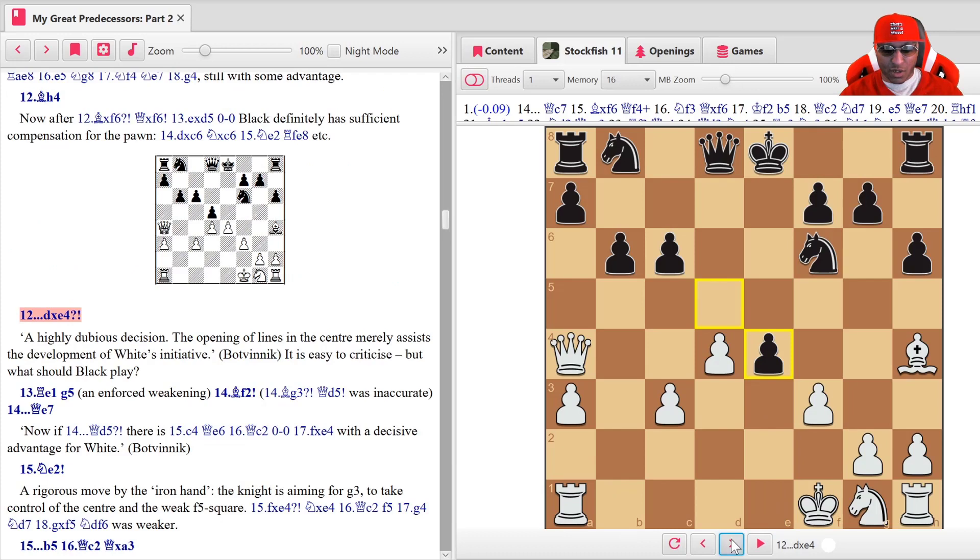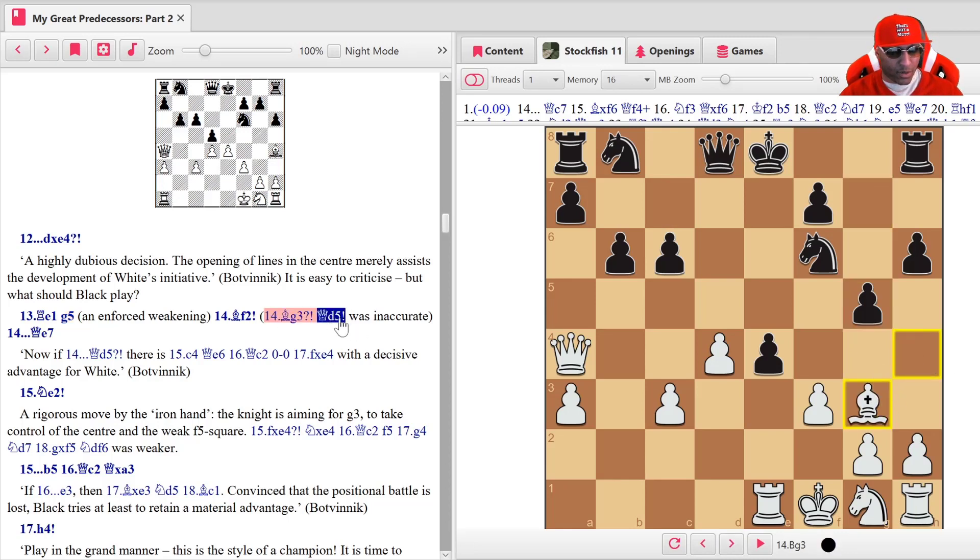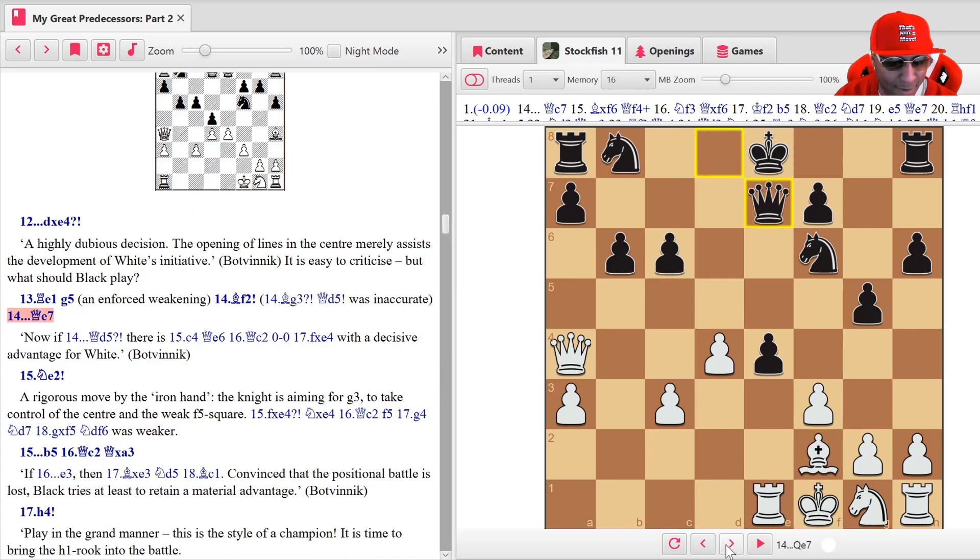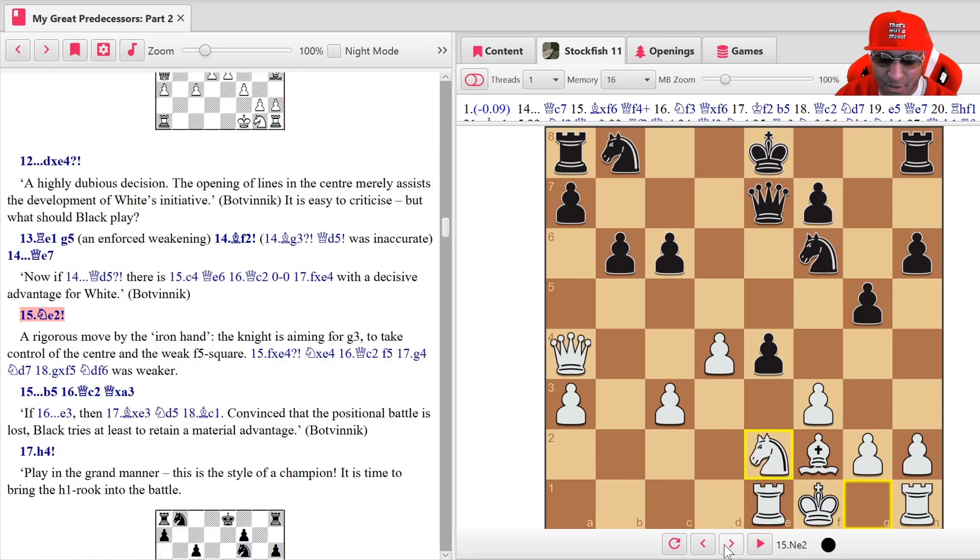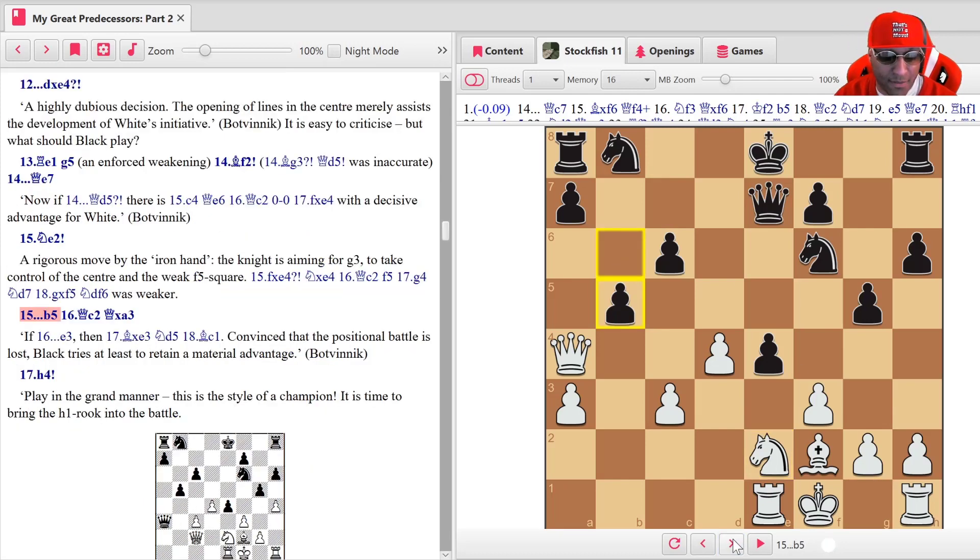Let's go back. Rook e1 and g5, this is an enforced weakening. Then bishop f2, which is nice. If bishop g3, queen d5, this was inaccurate. Is it that bad? I mean queen d5 doesn't look that bad, but I guess so. Bishop to f2 is what he played instead. After queen to e7, we have knight to e2. I'm going to g3, I'm going to f5, I'm going to hit the e4 pawn. Knight to e2, b5, queen c2, and queen takes a3.